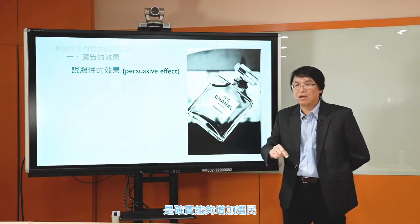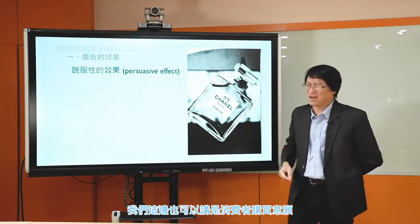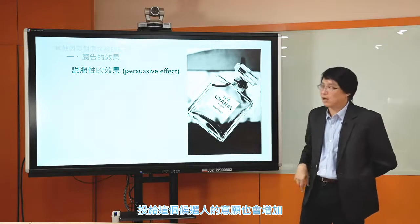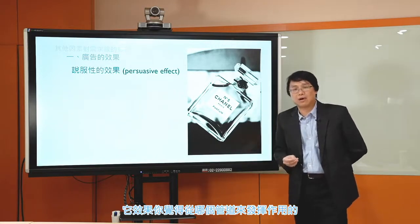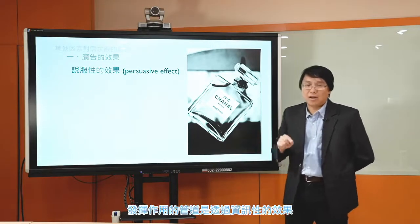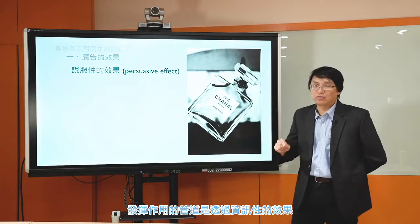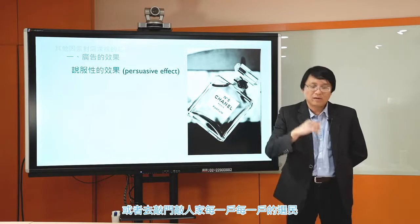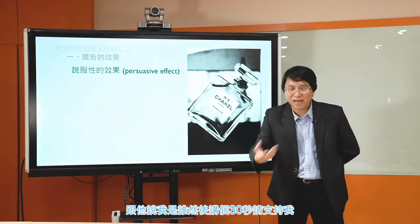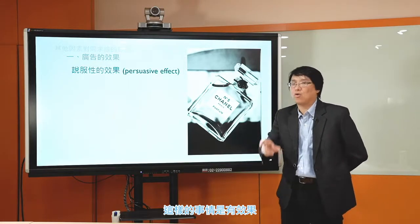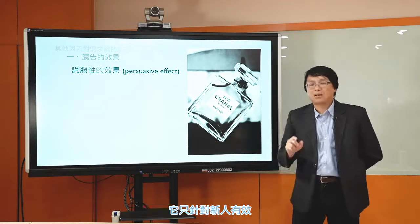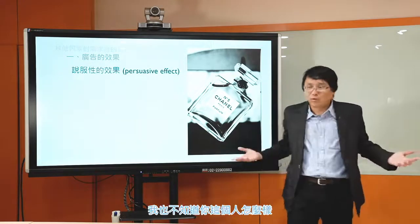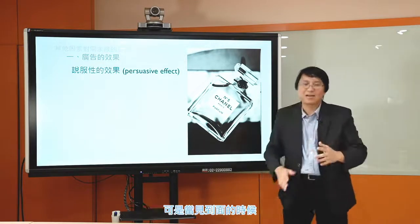他效果是從哪個渠道來發揮作用的？他們的看法是發揮作用的渠道是透過資訊性的效果。他們發現一件有趣的事情：去菜市場敗票，或是去敲門跟每一戶選民說「我是誰誰誰，請支持我」這樣的事情是有效果的，可是他的效果只針對新人有效——就是我們台灣在講的見面三分情。有些時候我沒看過你、不知道你這個人怎麼樣，看到廣告都是你在電視上的形象；可是當見到面的時候，選民看到這個候選人的樣子，對他稍微了解一點點，傳遞給他一些關於候選人的特性，這個東西會讓選民降低投給這個人的不確定性、更了解他，所以就會增加投票意願。